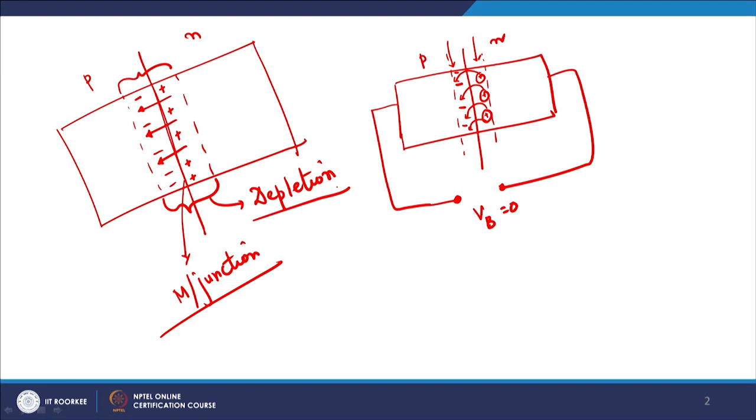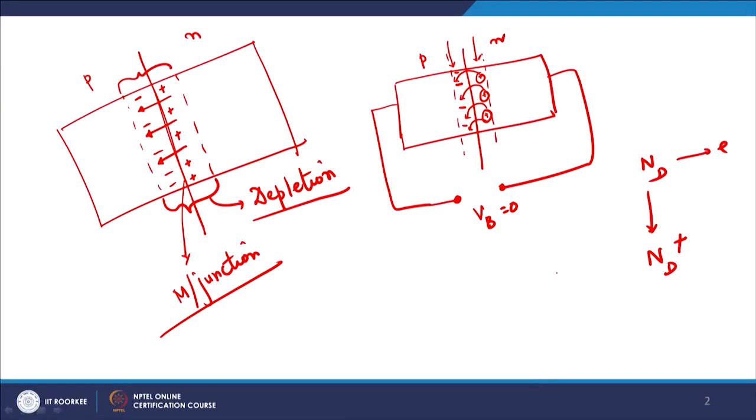Please understand — there are charges in this region but these are fixed charges, not free charges. Why fixed charges? Because electrons have left their positions leaving behind the ionized donor atoms. If a donor atom ND gives one electron, it converts itself to ND+. An acceptor atom gives one hole and becomes a negative atom. This is why the region is depleted of free charge carriers.